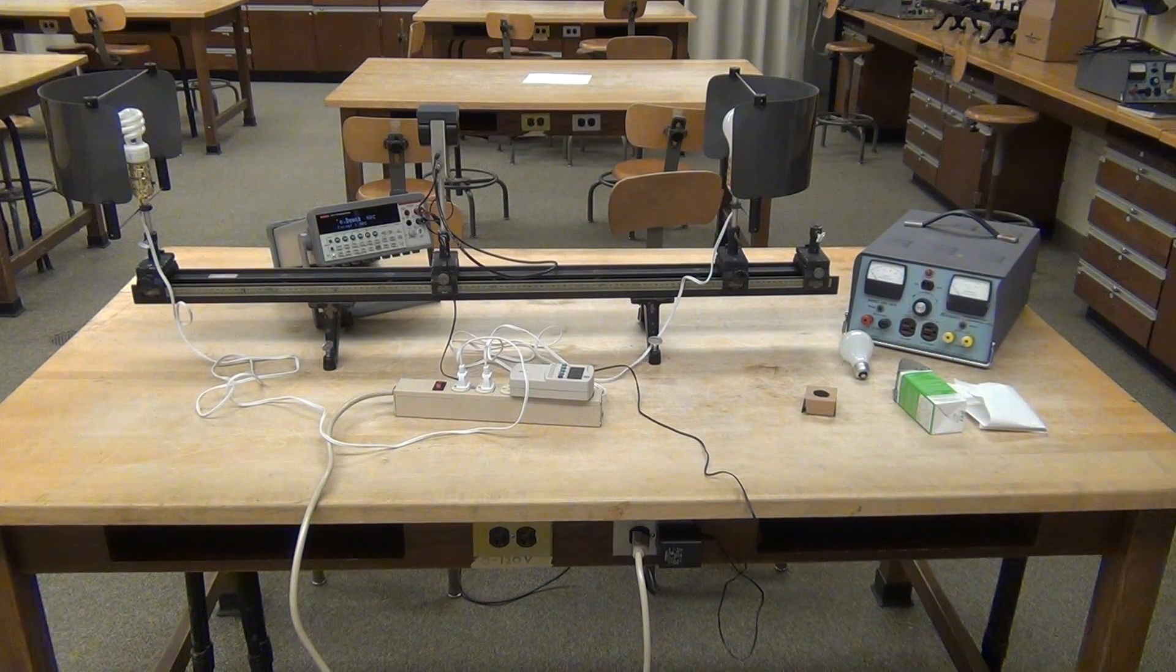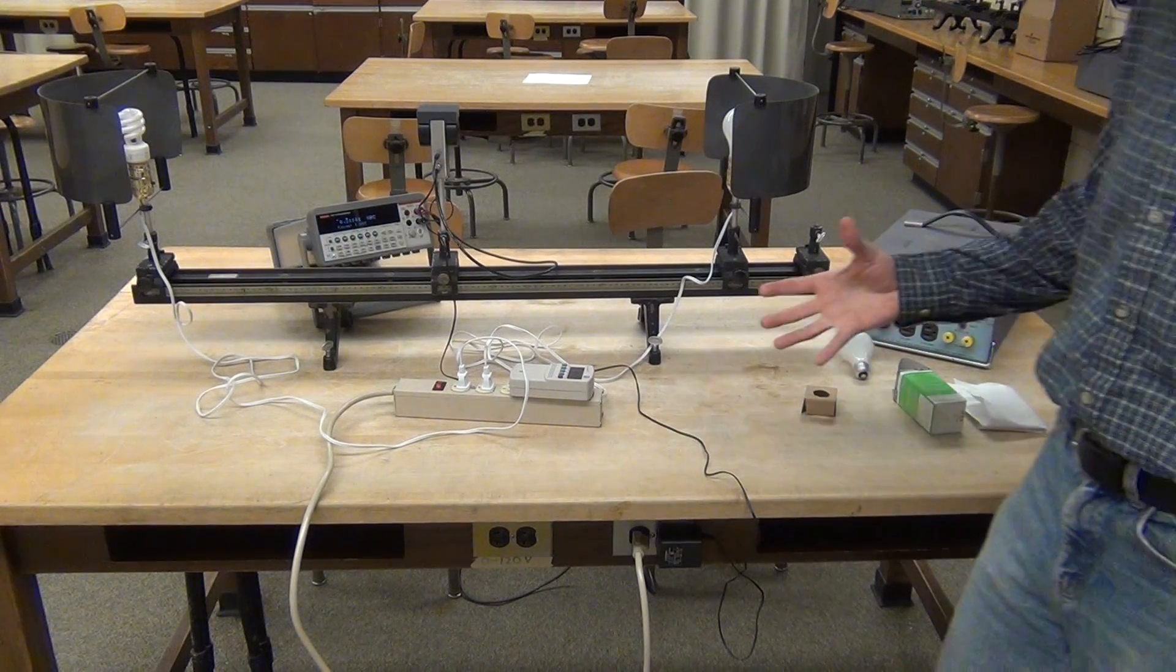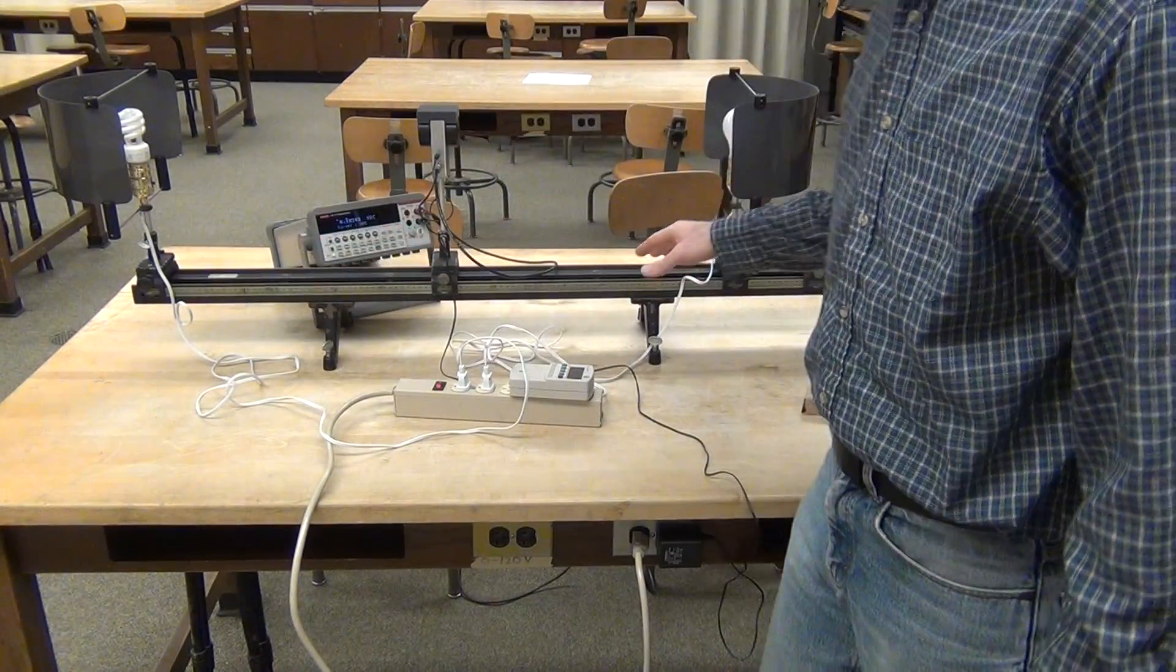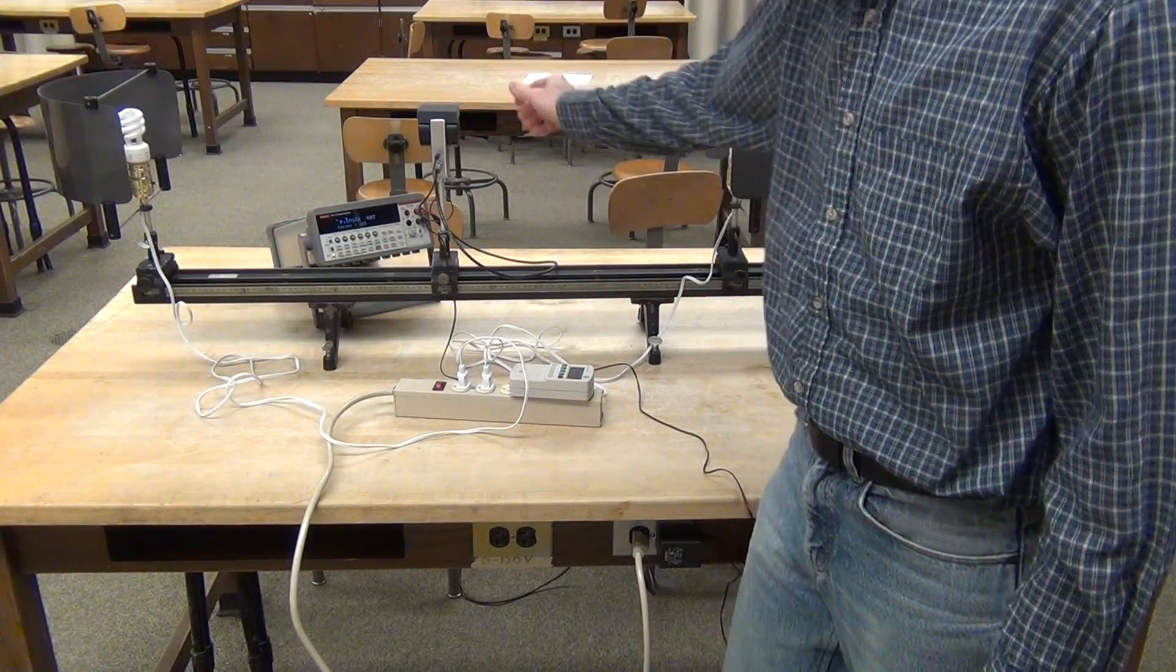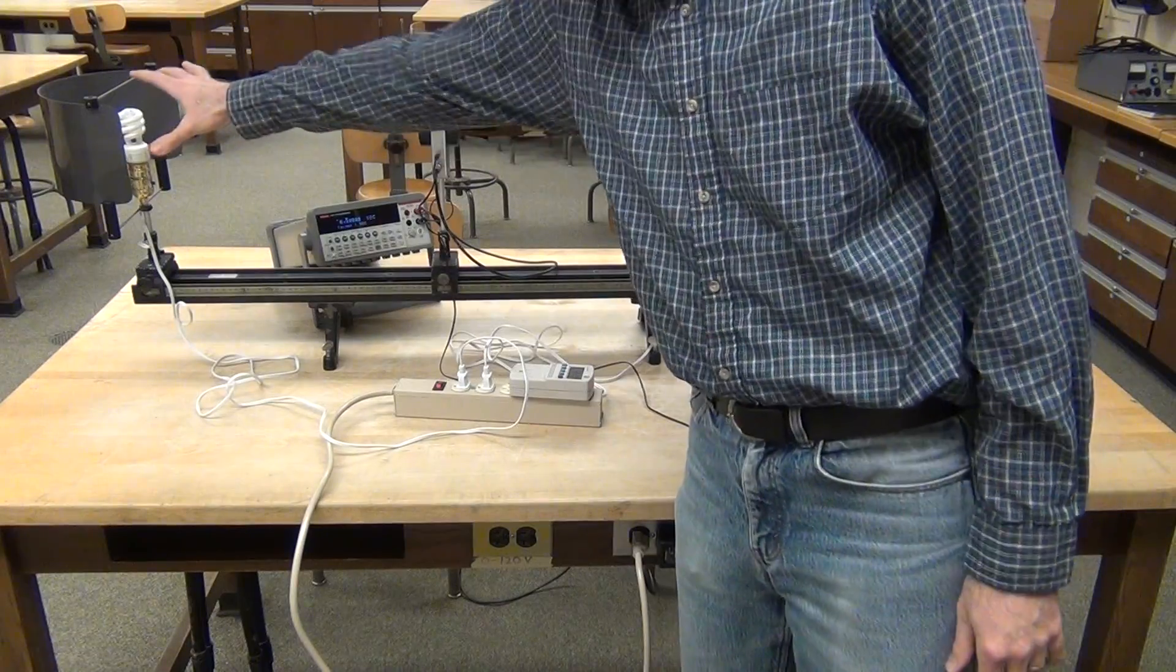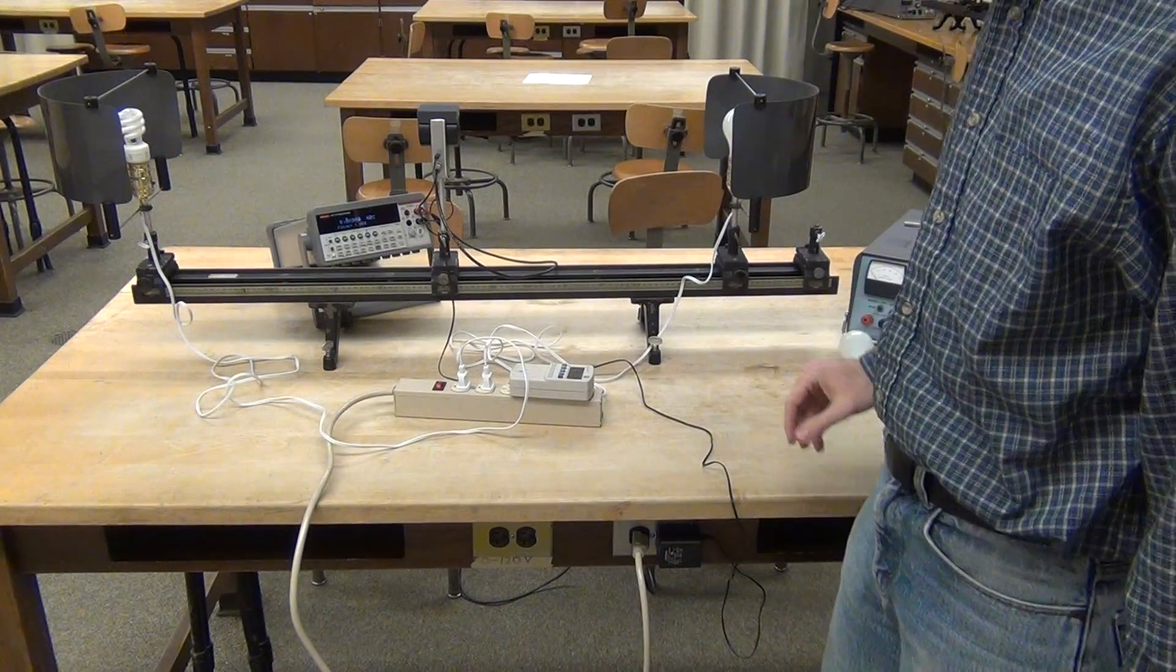This is the equipment for the bulbs and tower lab. For the first part, we've got our optical bench, photoresistor box, multimeter, light bulbs and holders, and an extra light bulb.